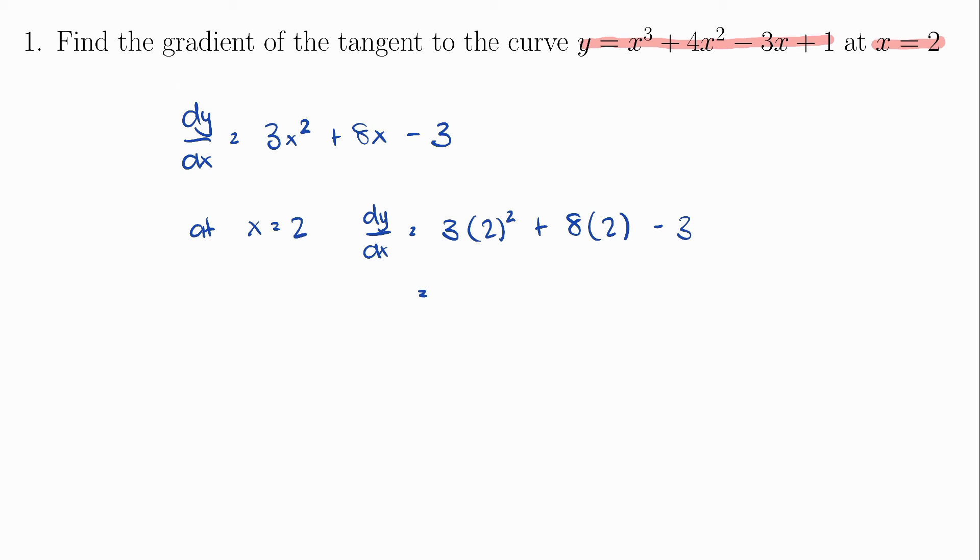3 times 2 squared is 12, plus 8 times 2, which is 16, and take away 3. This value is equal to 25.